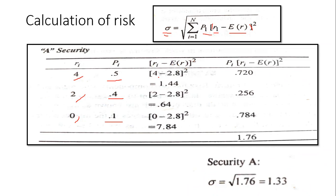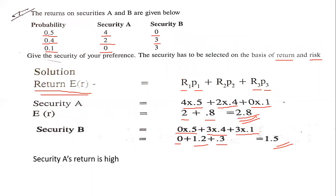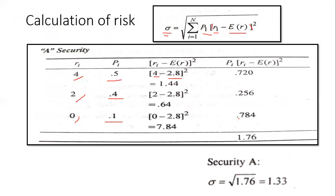For Security A, the returns are 4, 2, and 0, with probabilities 0.5, 0.4, and 0.1, and the expected return is 2.8. Applying the formula: (4 − 2.8)² = 1.44; (2 − 2.8)² = 0.64; (0 − 2.8)² = 7.84.